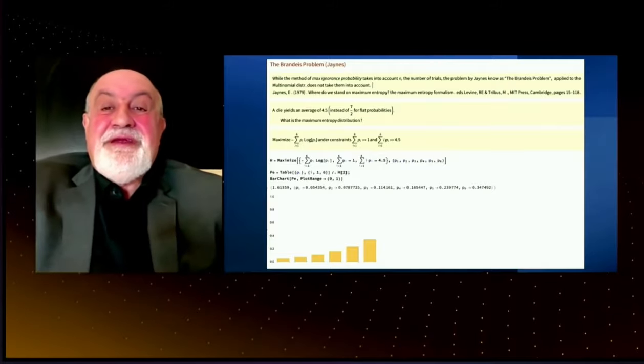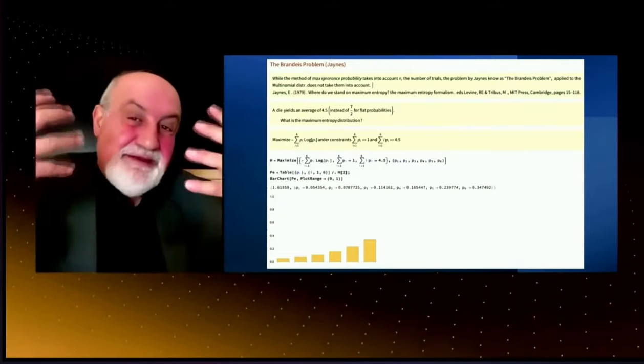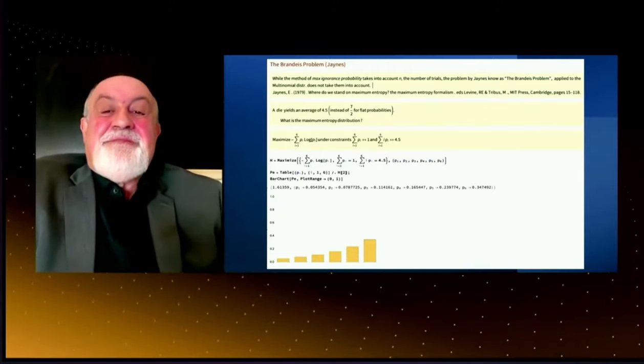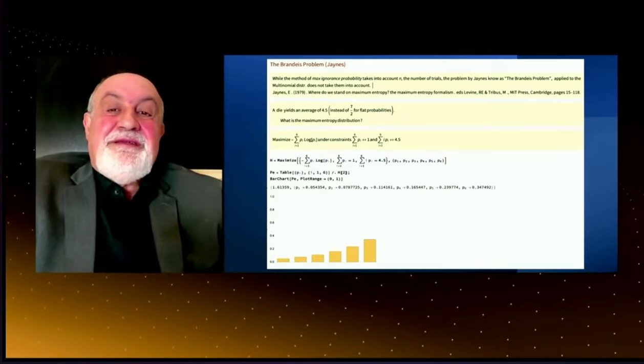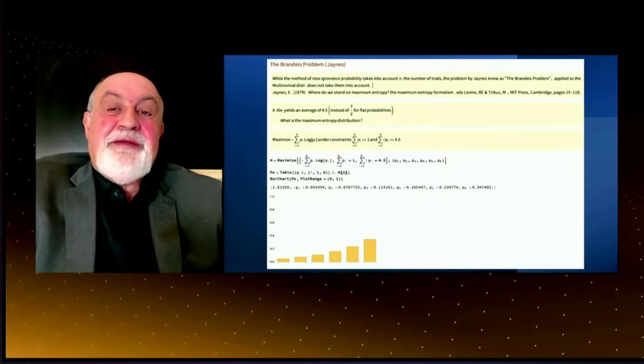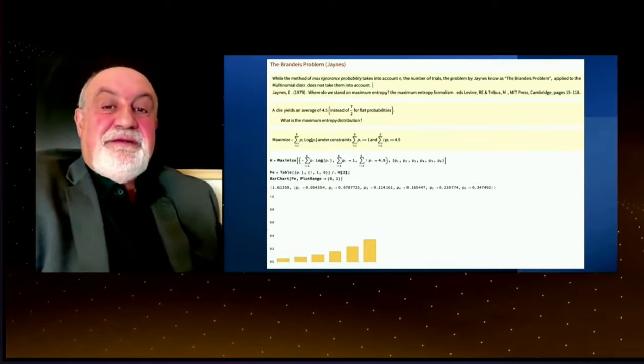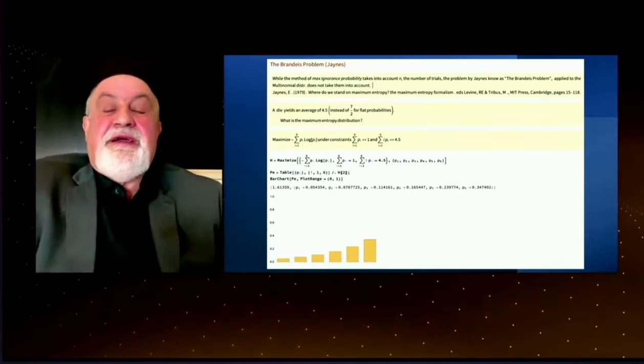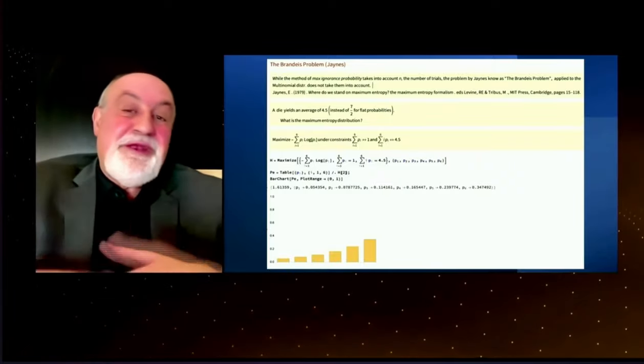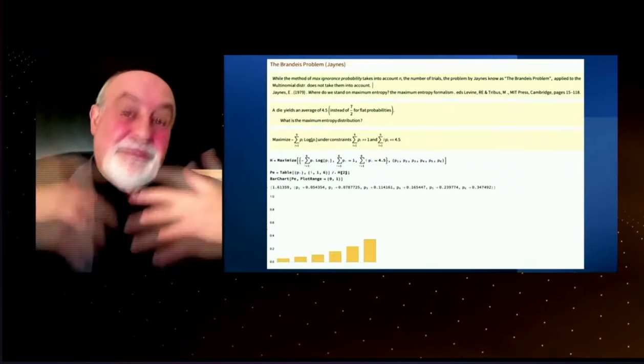Finally, for finishing, I would say that in fact this idea of the maximum ignorance probability is present but was not really developed. We didn't have the capabilities. James, for example, brings the case of a die that yields on average four and a half instead of three and a half. What is the most likely combination probability that you get based on maximum ignorance?